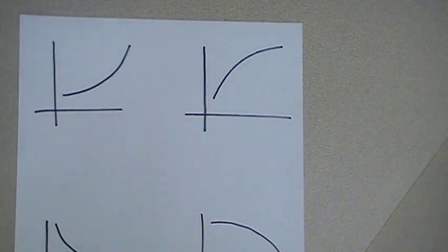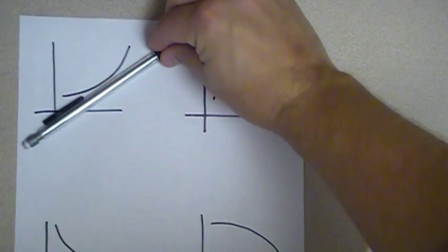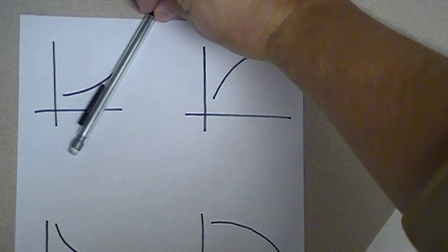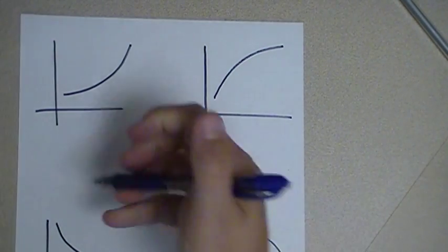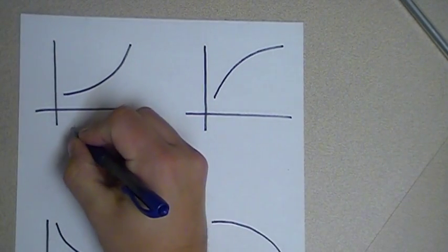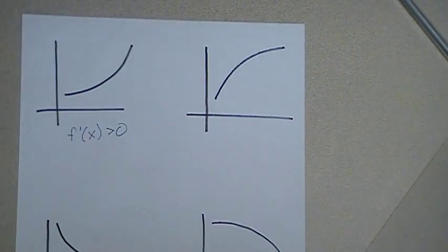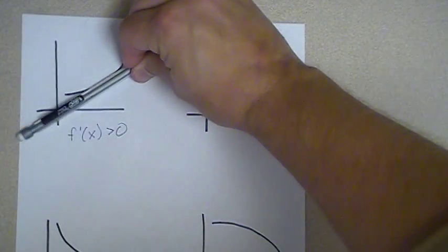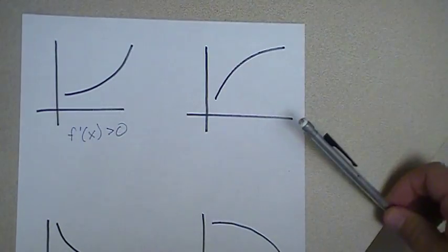You'd hopefully say: check out the slopes of those tangent lines. The slopes of the tangent line anywhere you look on this graph are always positive. So you'd probably say that f prime of x is greater than zero, because f prime of x determines the slope of the tangent line on a graph. The slope of the tangent line is always positive here, so f prime of x is always greater than zero.